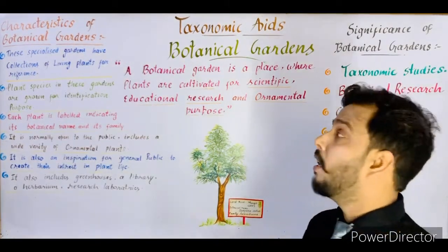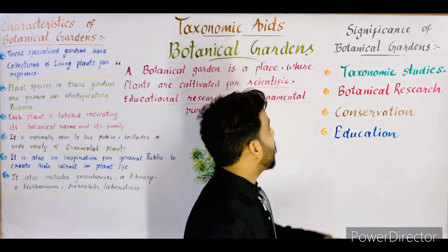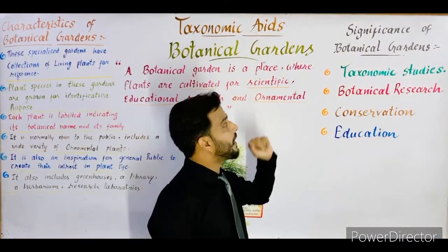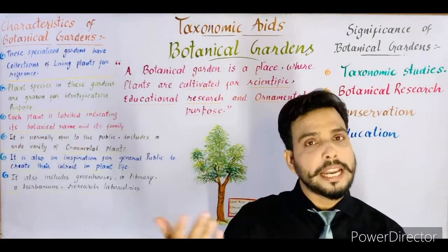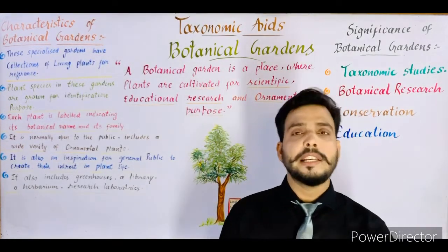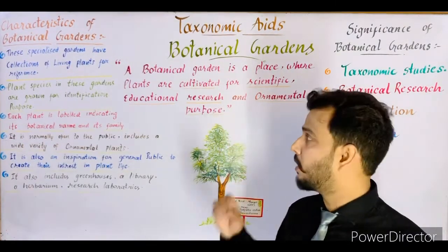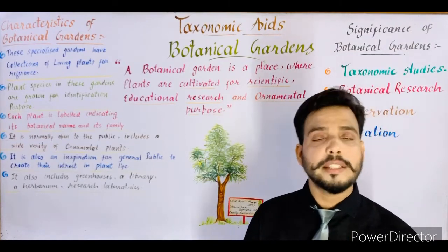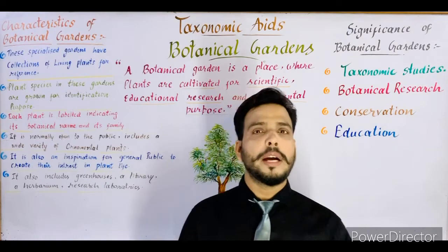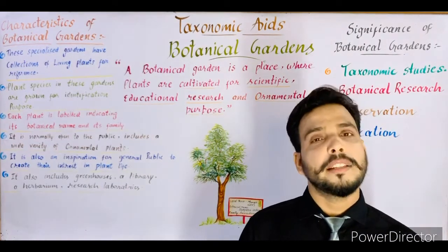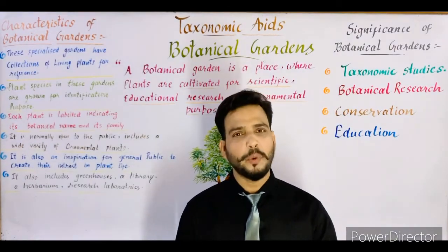In this video I told you about botanical garden as a taxonomic aid, about the characteristics of botanical garden, the significance of botanical garden, and some important names of botanical gardens in the world and in India. If you have any confusion or question, you may ask in the comment section. In the next lecture, I'll tell you about the next taxonomic aid — a zoological park or a museum. Thanks for watching, have a good day.